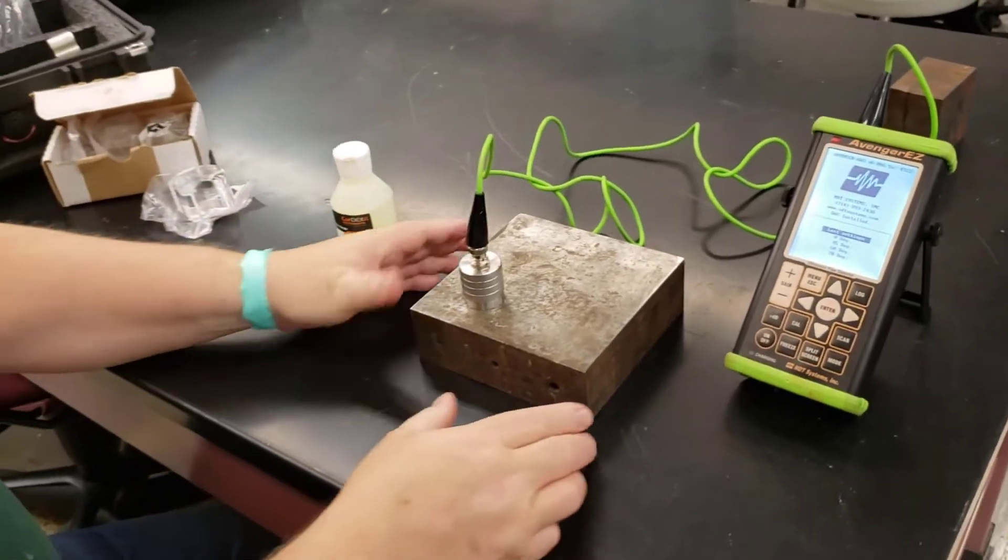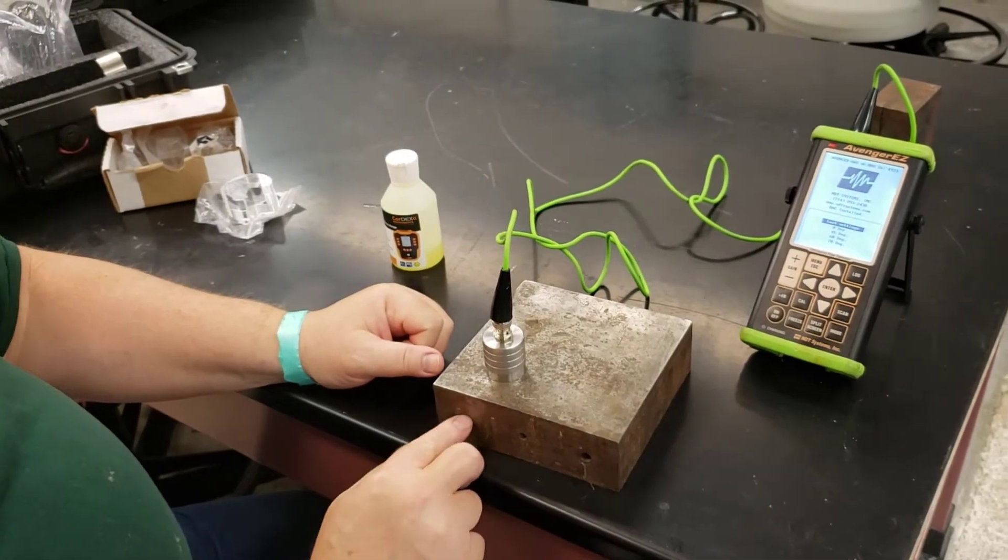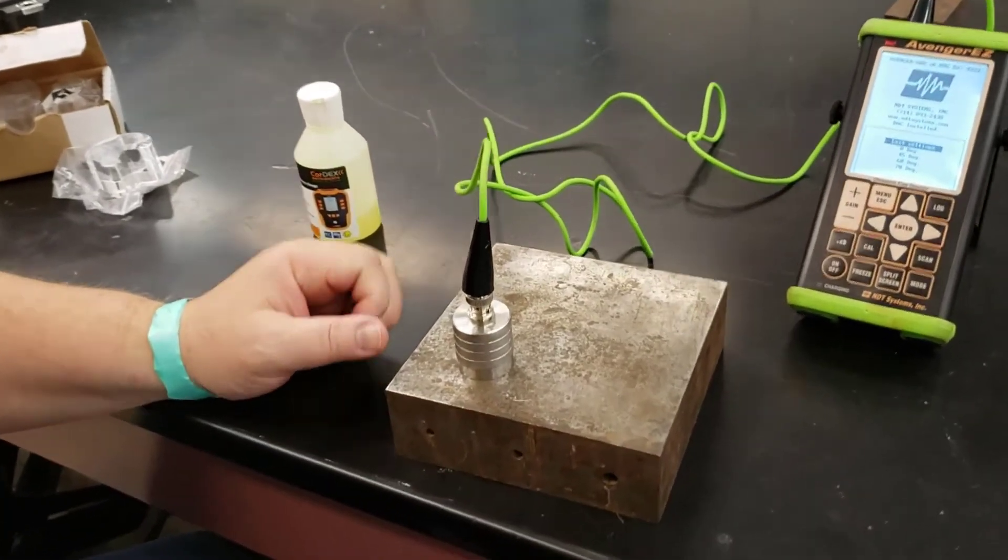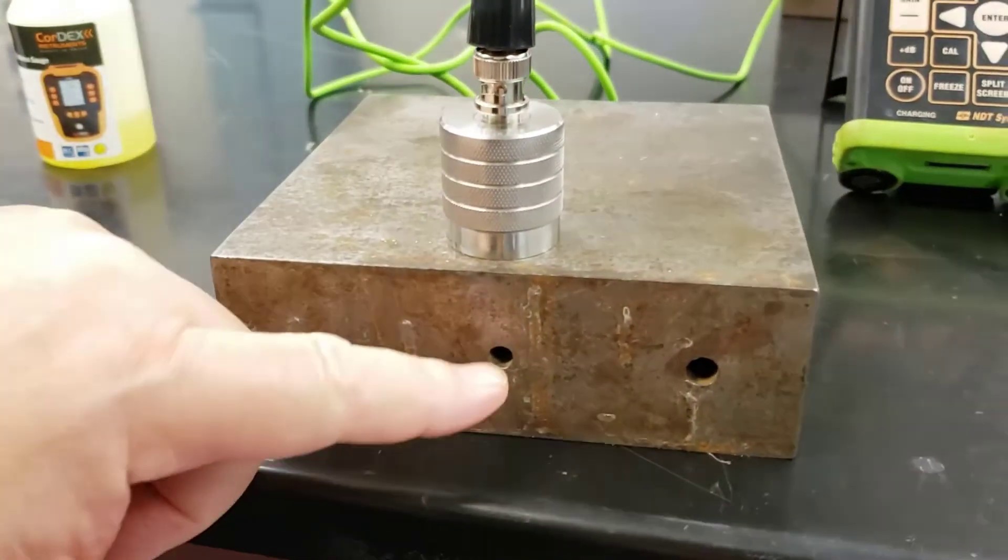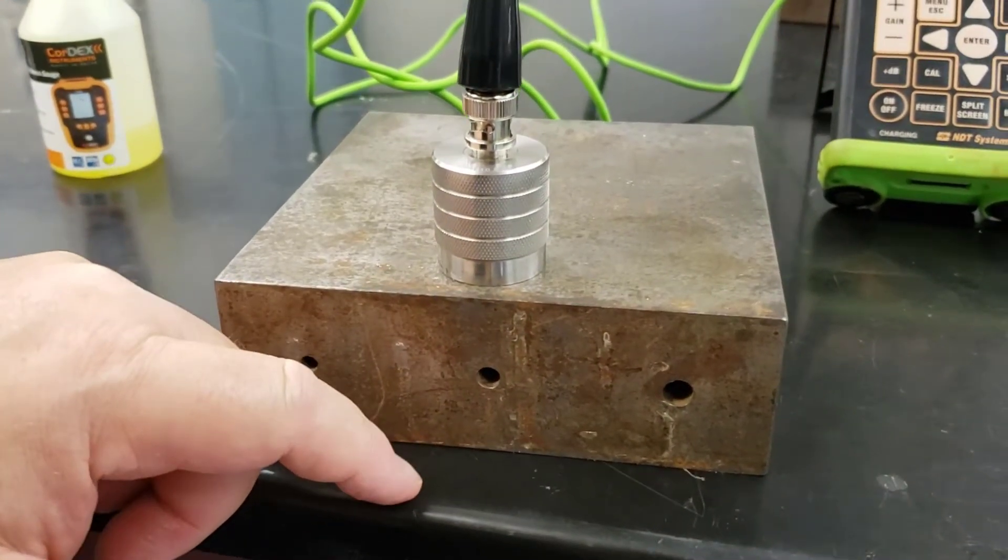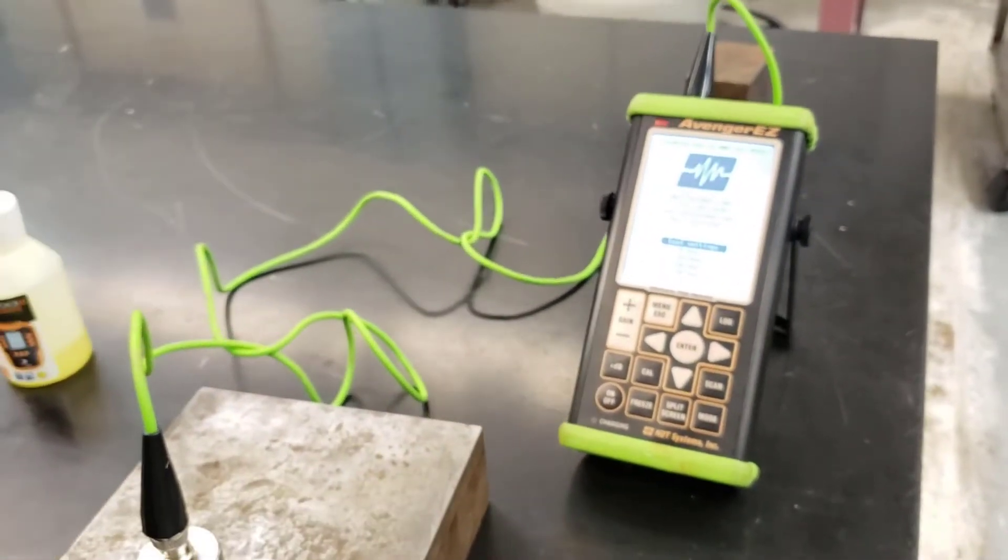But for straight crack detection, what we have here is a nice block of steel, two inches thick, and we've drilled three different size holes in it. What we're hoping to see is that as the transducer passes over the hole, we get a mark on our screen. So let's see how that works.